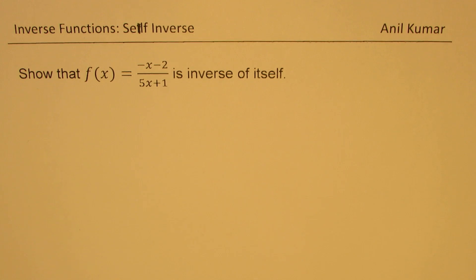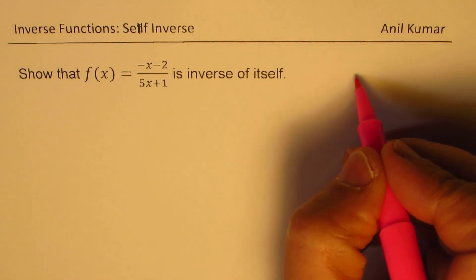The question here is, show that f of x equals minus x minus 2 over 5x plus 1 is inverse of itself. So let me talk about the basic concept first and then we'll go in for the solution.